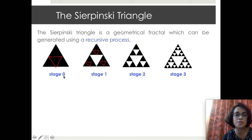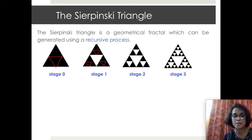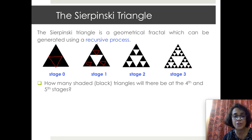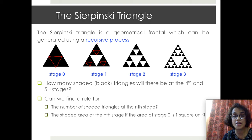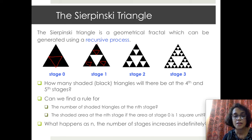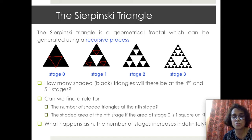These stages can be named: the first stage is called stage zero because it is a 'do nothing' stage, and thereafter we have stages one, two, and three. Let us ask some interesting questions to explore this fractal. How many black shaded triangles will there be at the fourth or fifth stages? Can we find a rule for the number of shaded triangles at the nth stage? Can we find the shaded area at the nth stage if the area at stage zero is one square unit? And what happens as n increases indefinitely? I would request you to pause this video and think about these questions.